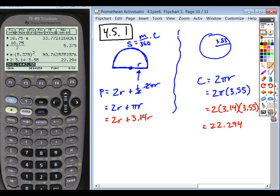so 2 times 3.14 times 3.55, that's equal to 22.294. And then when you add 2R and 3.14R, what do you get? Okay, the biggest confusion came because students wanted to divide by 2 and then divide by pi to isolate these. You can't. You have to combine your like terms first.